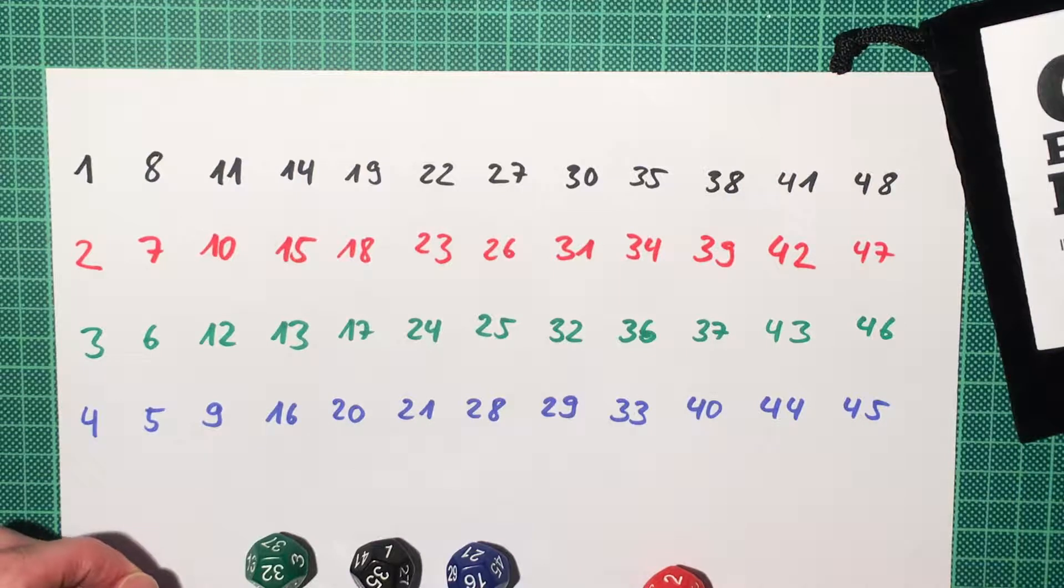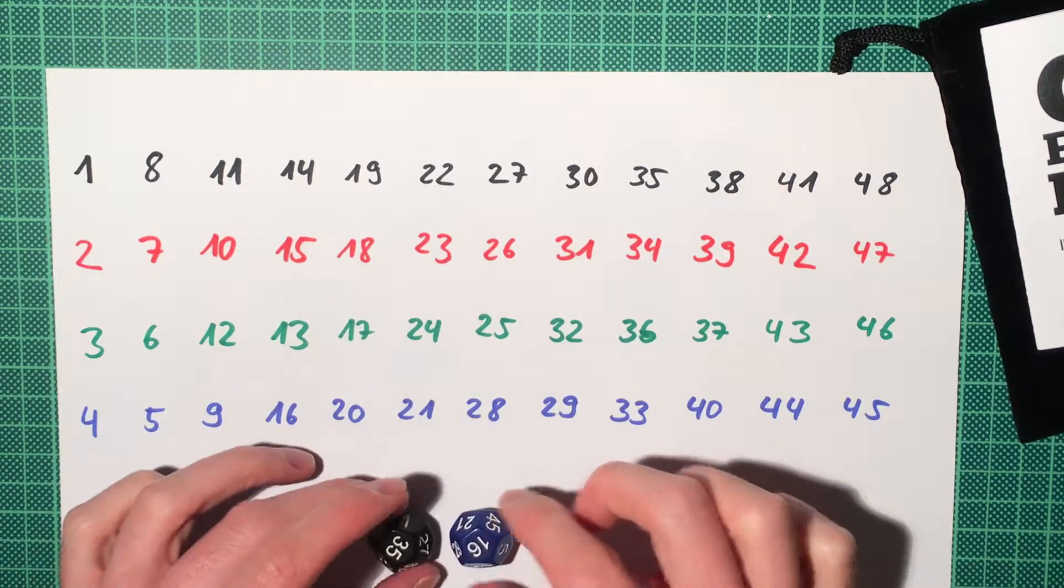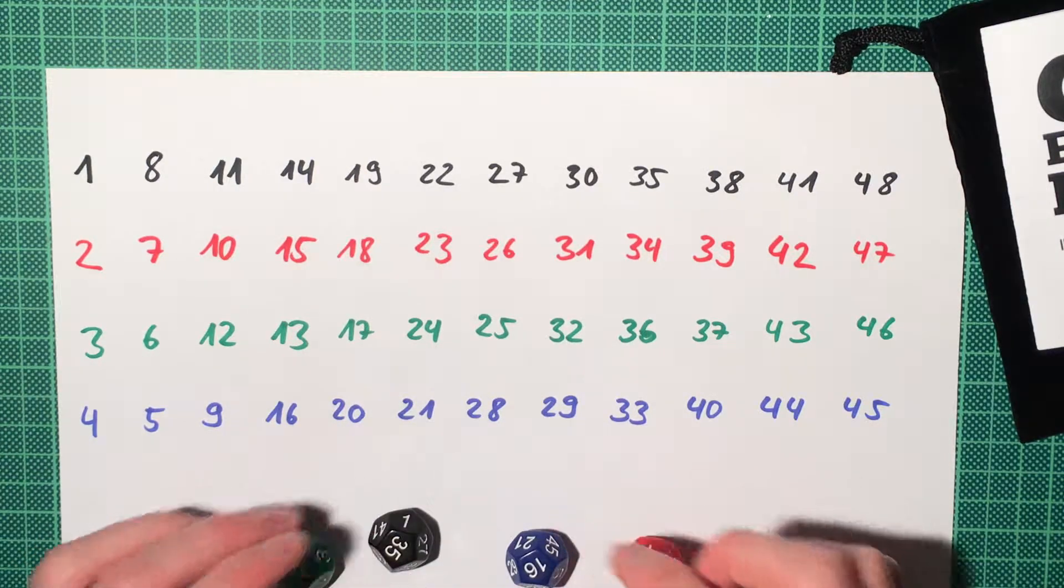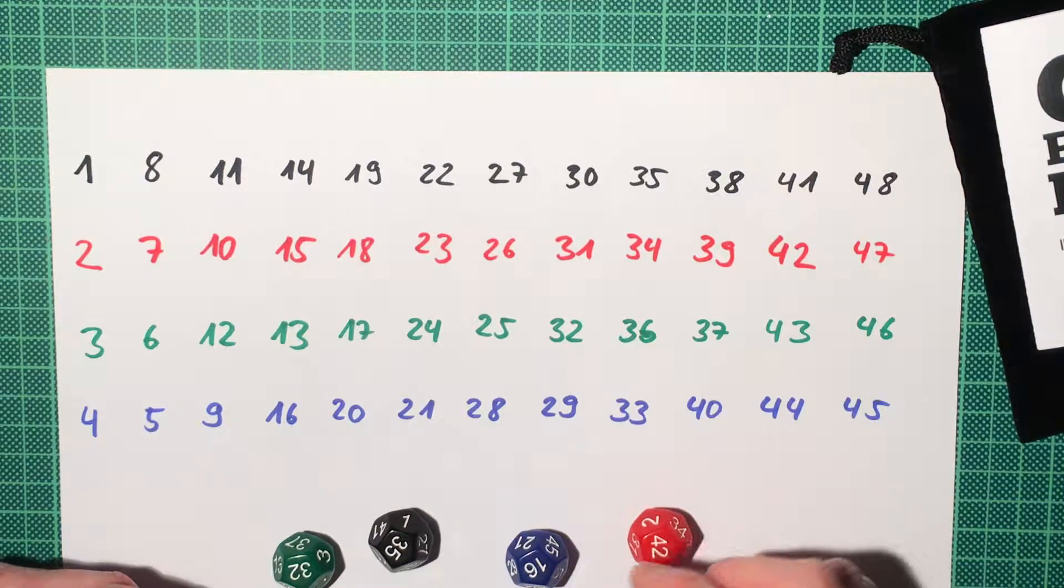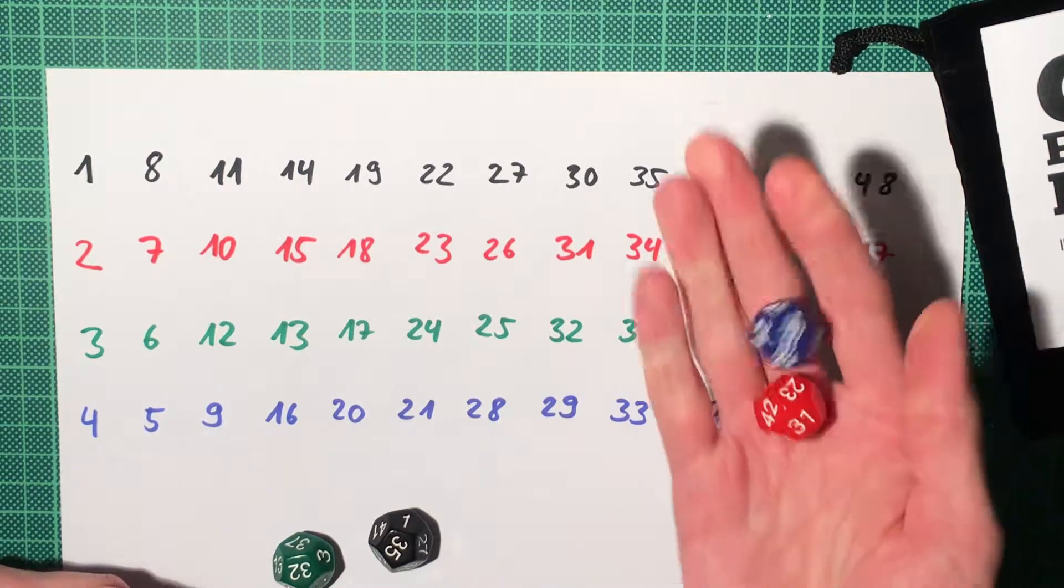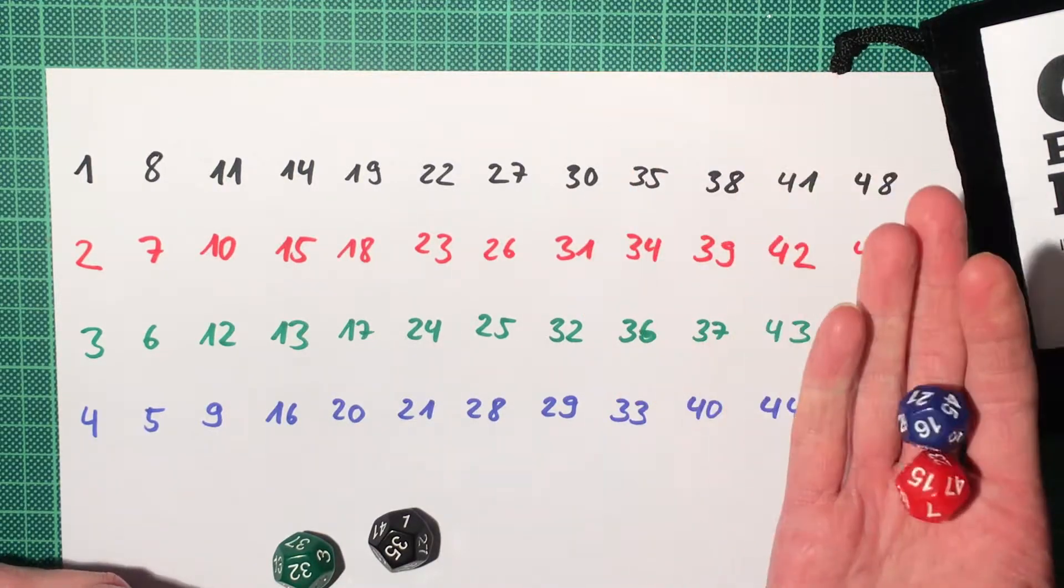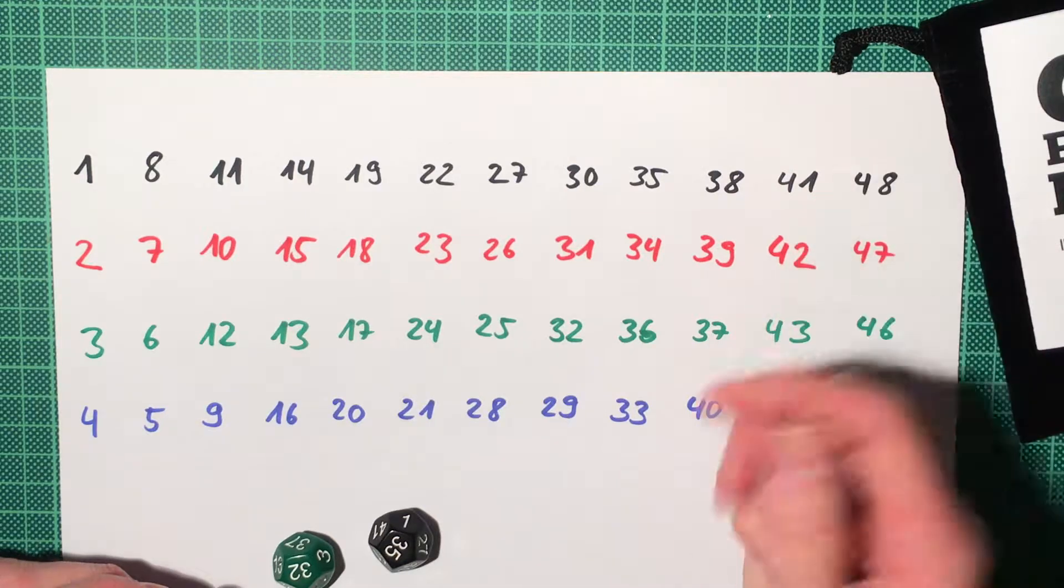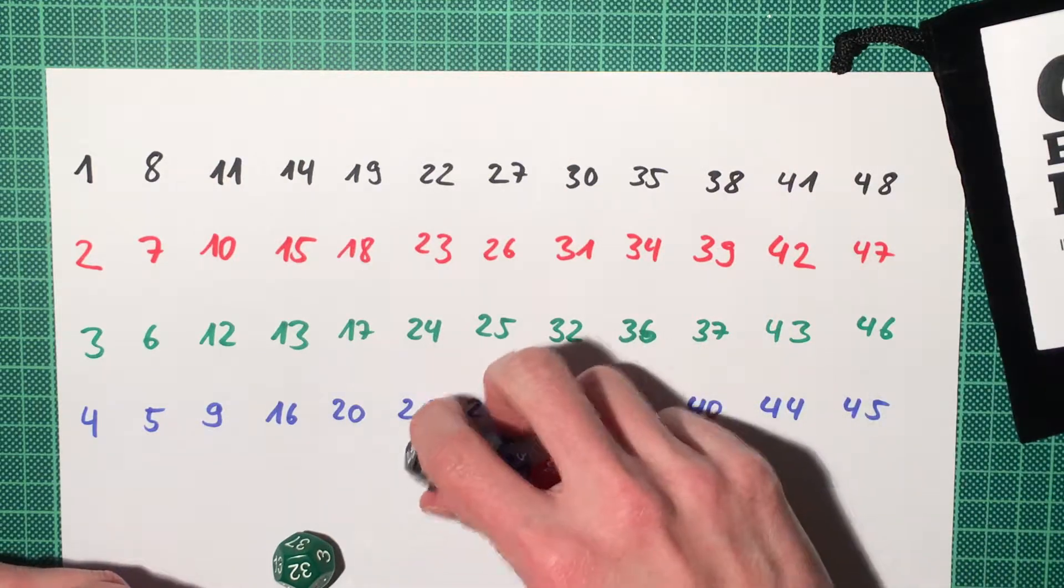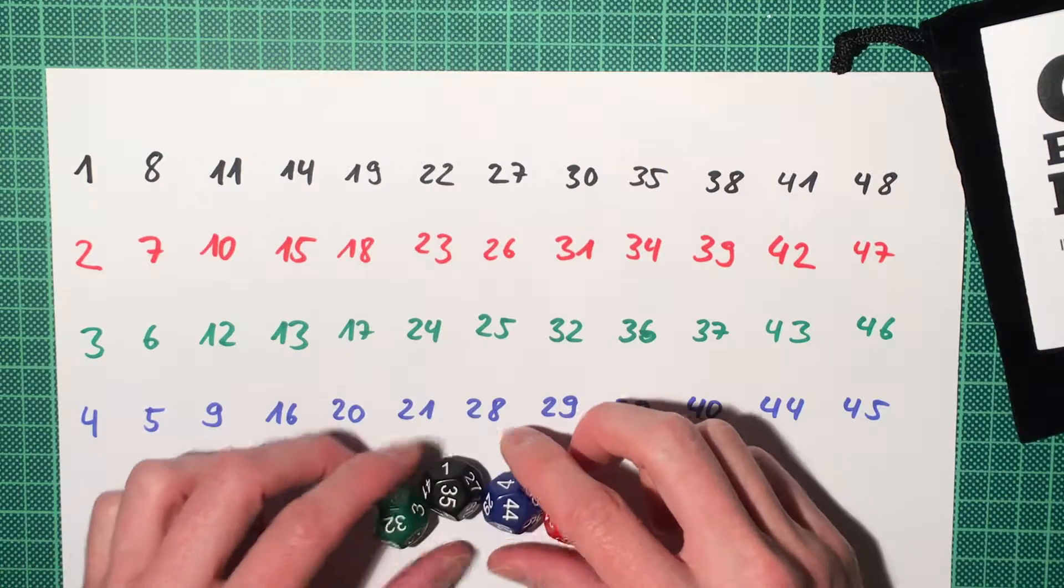So 1, 2, 3, 4 are ordered black, red, green, blue. Then you get 5, 6, 7, 8, 9, 10, 11, 12, and so on. So for every four numbers there's a nice permutation, and in this way they got an ordering that makes the dice fair.